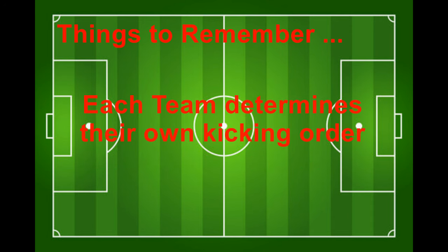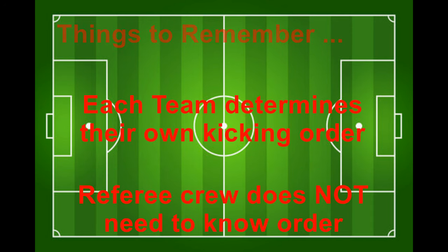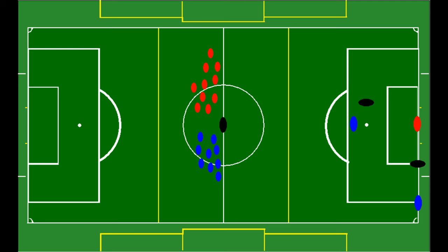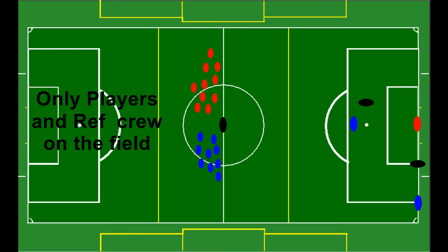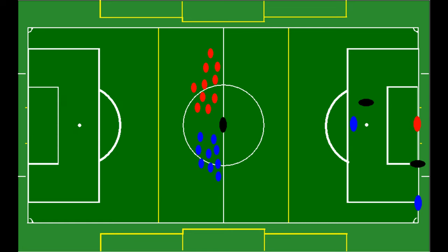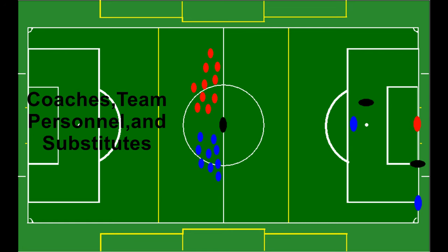Each team decides its own kicking order and the referee crew does not need to know ahead of time. Now it's time to get into position. Only players and the referee crew should be on the field. Coaches, team personnel, and substitutes should be in the technical area.